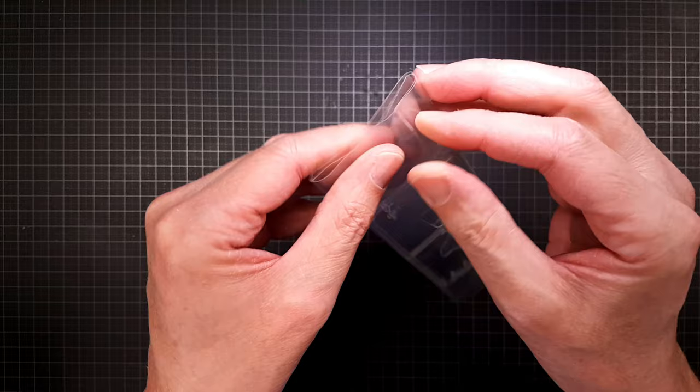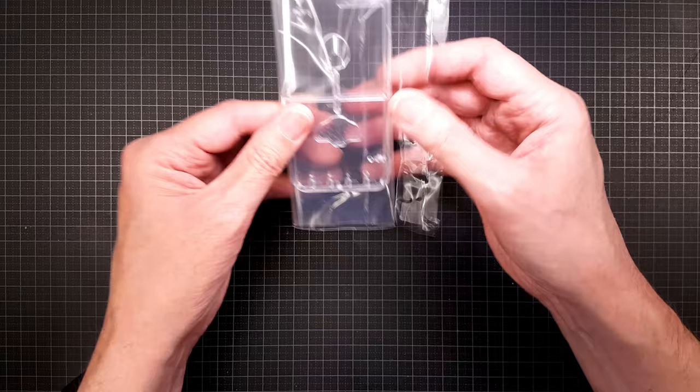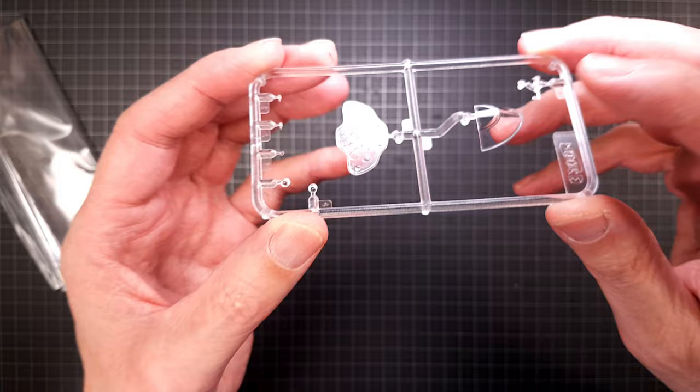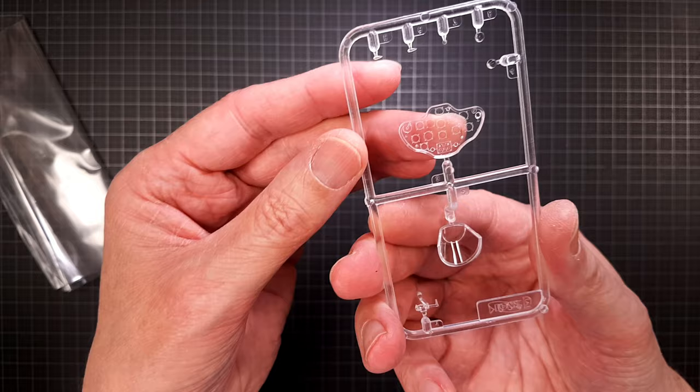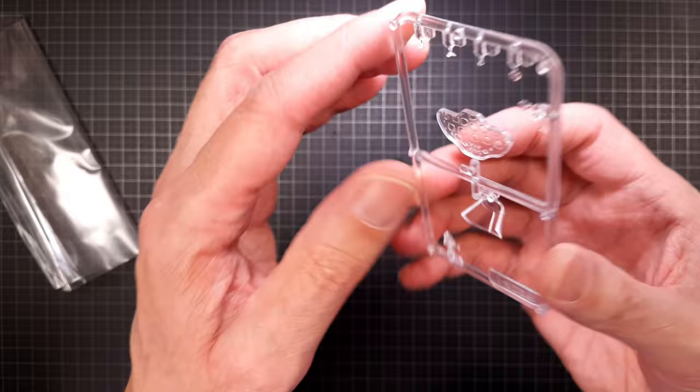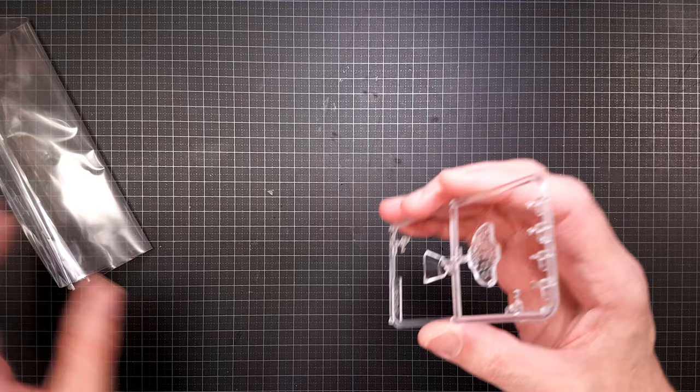The clear part is really nicely wrapped up in its own bag. There's not so many clear parts - there is a gun sight, the windscreen, the instrument panel which I think will look great with the decal sheet on there, and some navigation lights. Everything looks really good. This type of aircraft doesn't have any canopy, so it's only the windscreen.